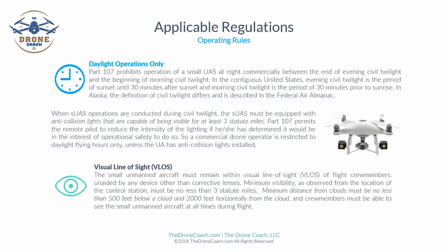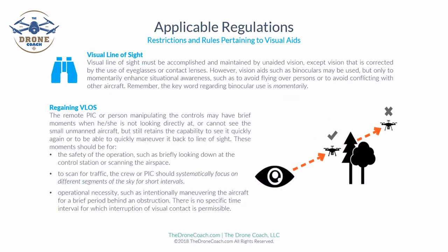Crew members must be able to see the small unmanned aircraft at all times during flight. When we get into weather in a later lesson, we'll understand how the 500-feet-below-cloud rule is especially important, particularly with ground fog. Visual line of sight must be accomplished and maintained by unaided vision, except vision corrected by eyeglasses.